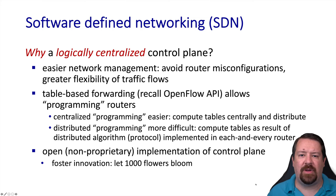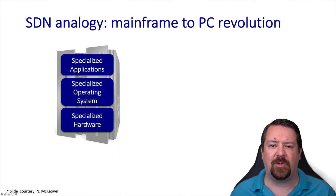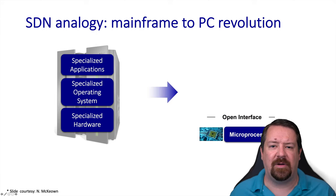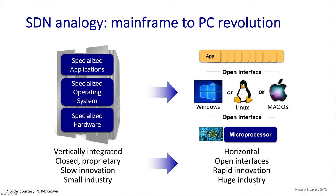Another motivation was opening up the control plane to innovation by developing open source controller software. There are parallels between the move from traditional routing to software-defined networks and the move from centralized mainframes to PCs distributed in everyone's home. Mainframes were a monolith of hardware, operating system, and application that only worked together, whereas when PCs were developed, the hardware interface was opened up so multiple operating systems and a plethora of applications could be developed, leading to an explosion of innovation. The hope is that the move to software-defined networks will provide similar benefits.